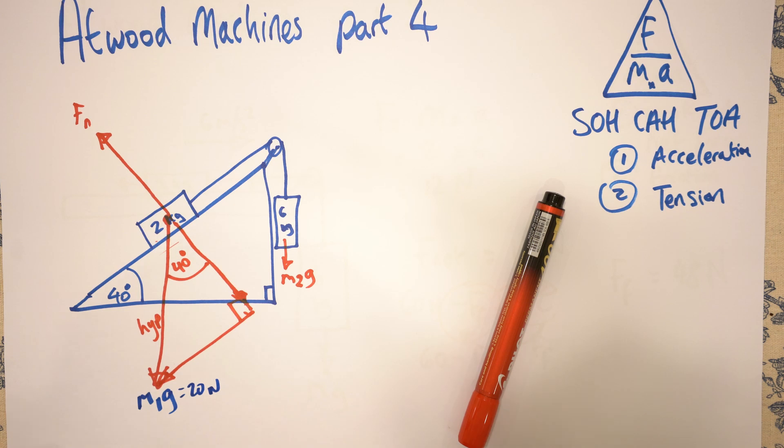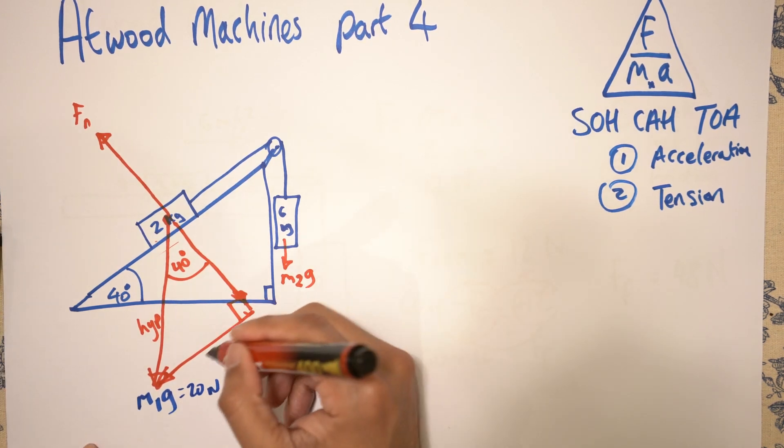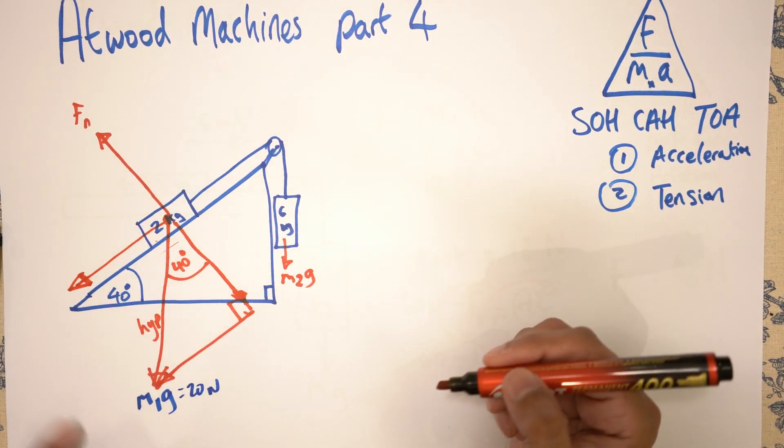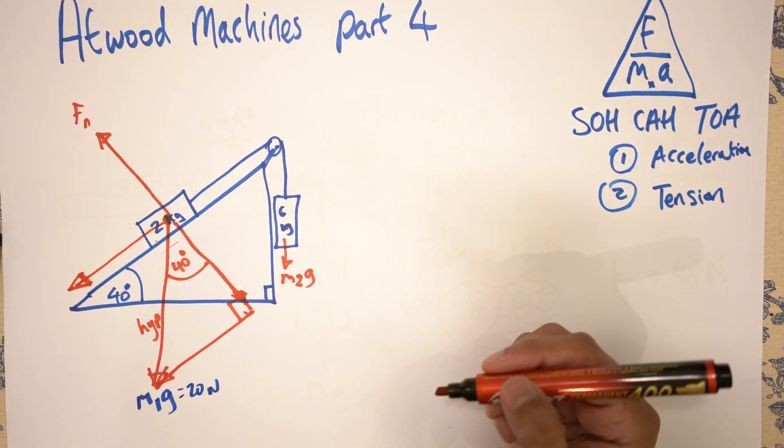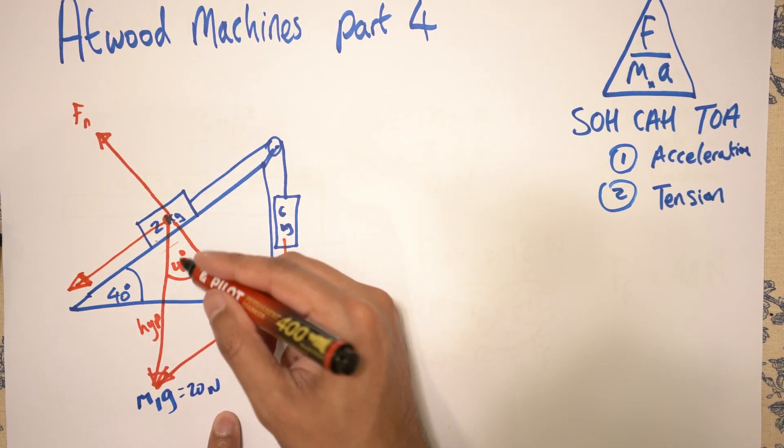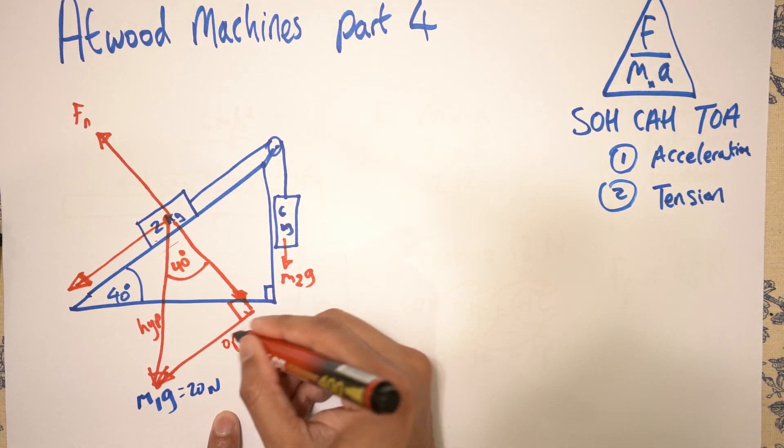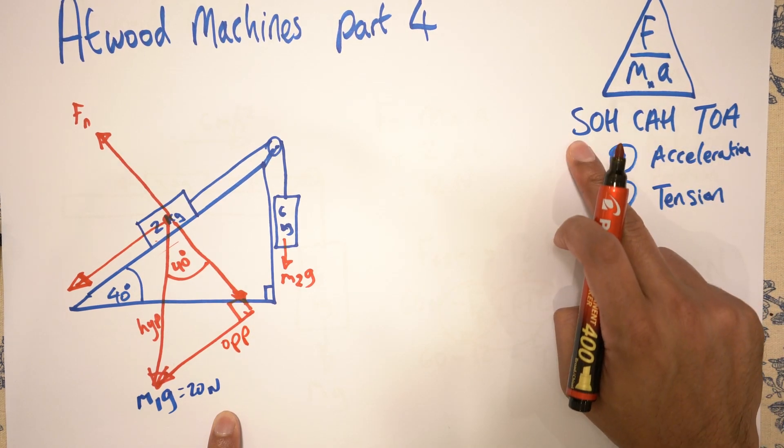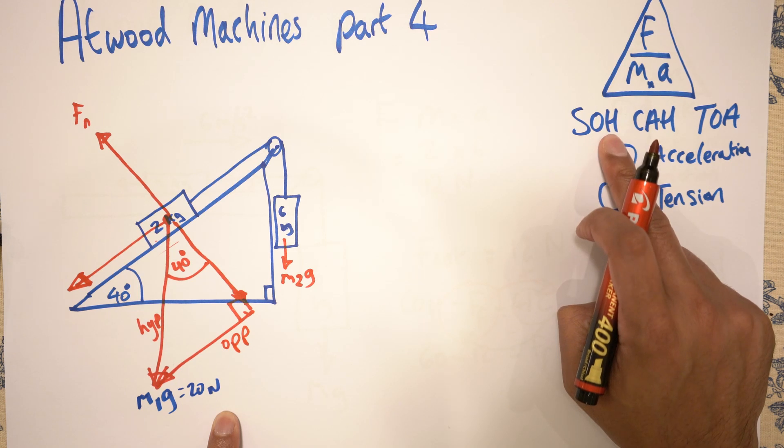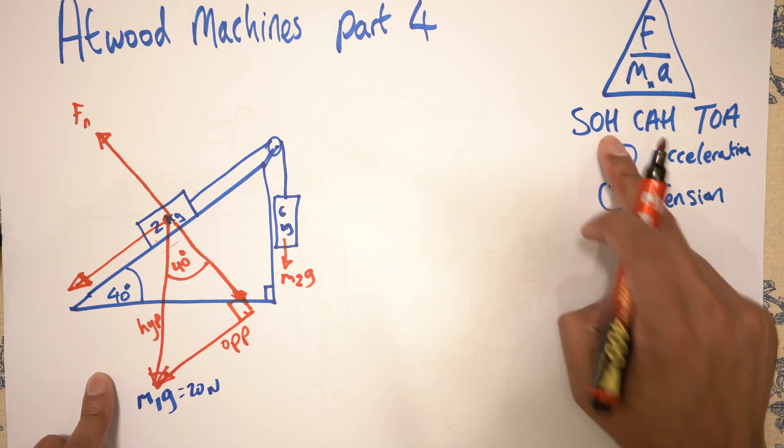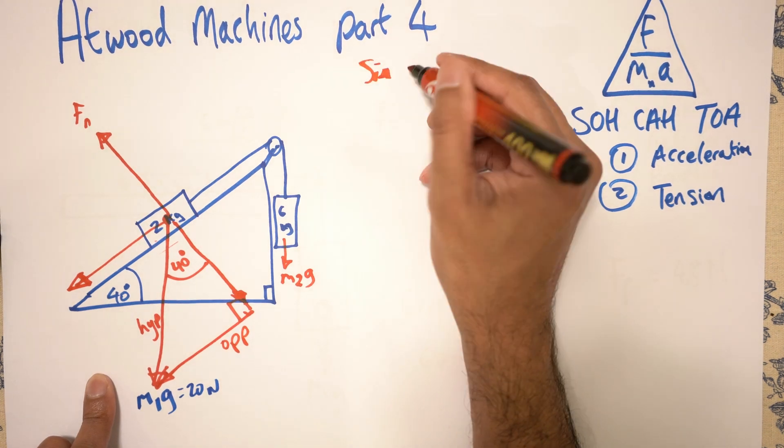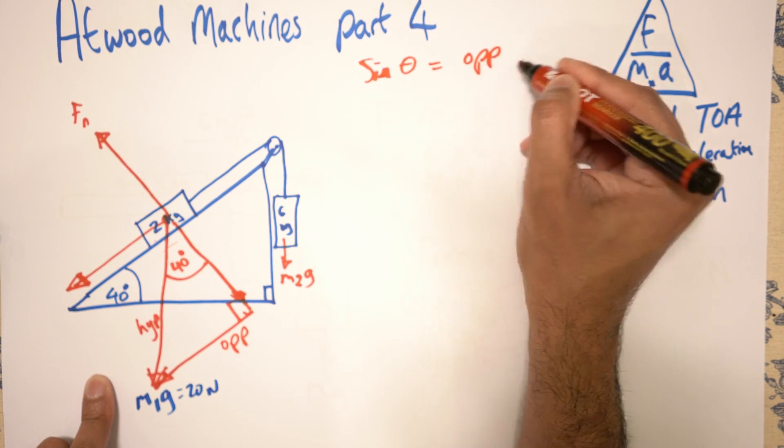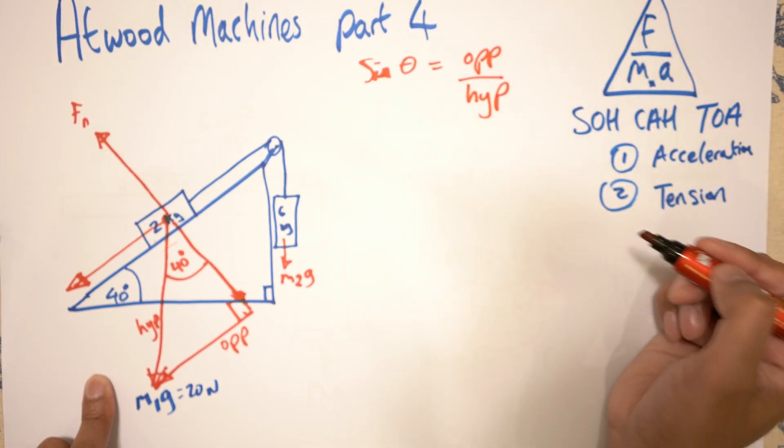So how do I work out this vector here, which is the equivalent of that force down there? Well, this one is opposite this angle. So if you use SOHCAHTOA, opposite sine theta is opposite over hypotenuse. So sine theta, I'll write that over here.